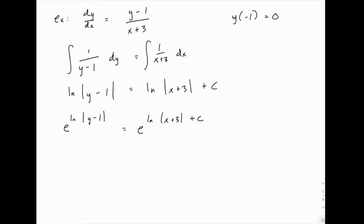So this is how we would solve them. Now notice on the right side, be very careful, that we didn't raise e just to the natural log, but we raised it to the entire right side of the equation. So we have e to the power of all of this, which I'm going to separate as e to the natural log of x plus 3, times e to the c.